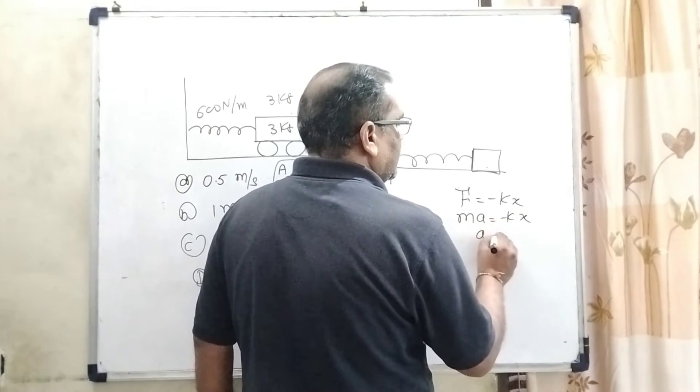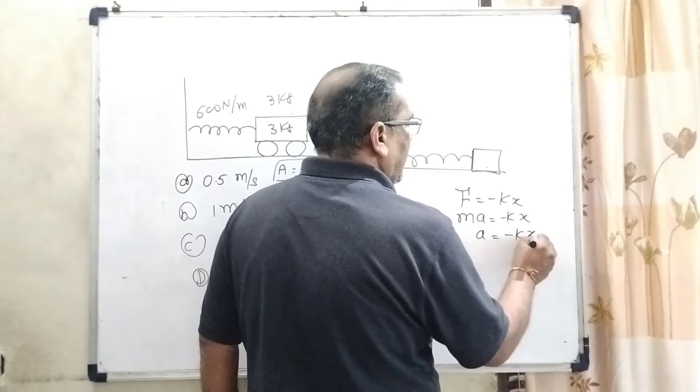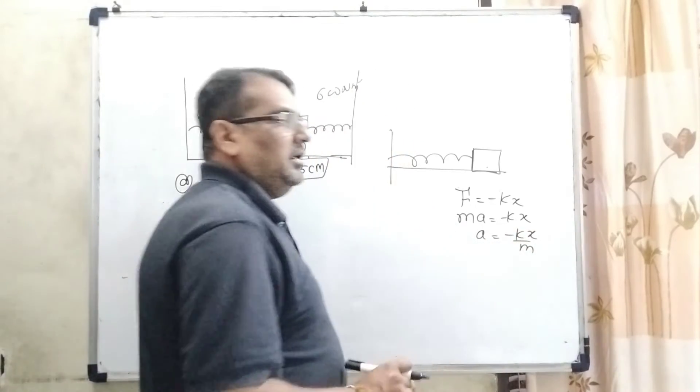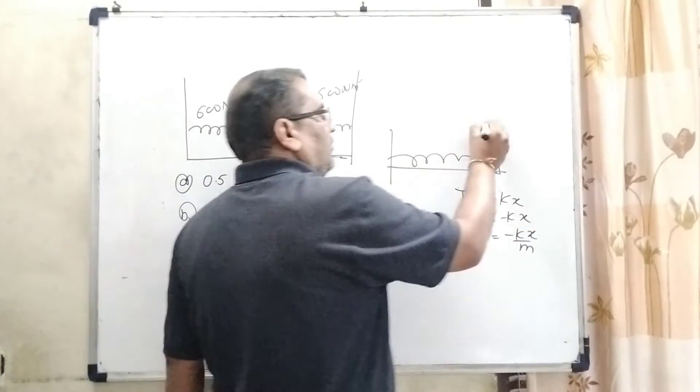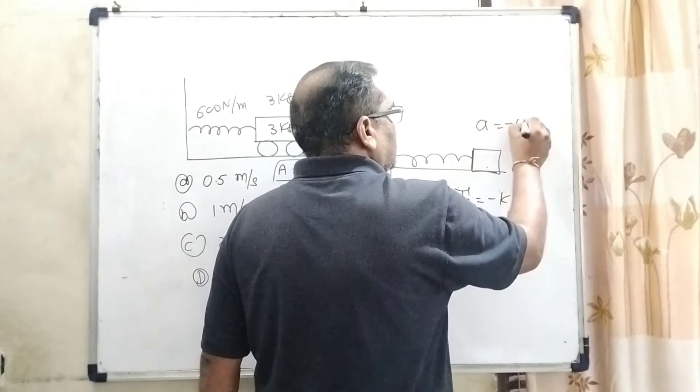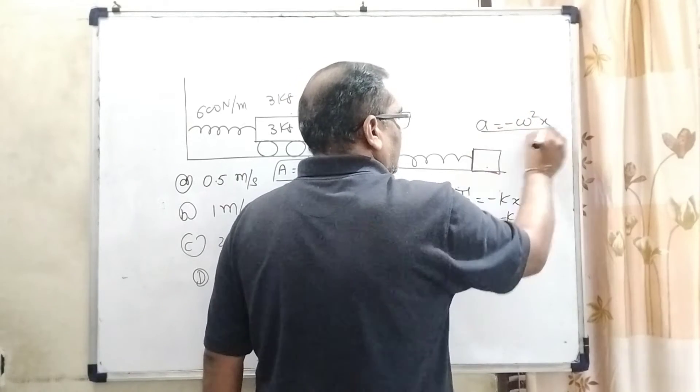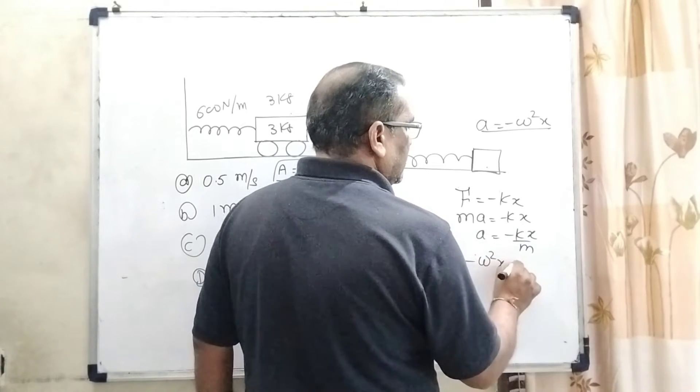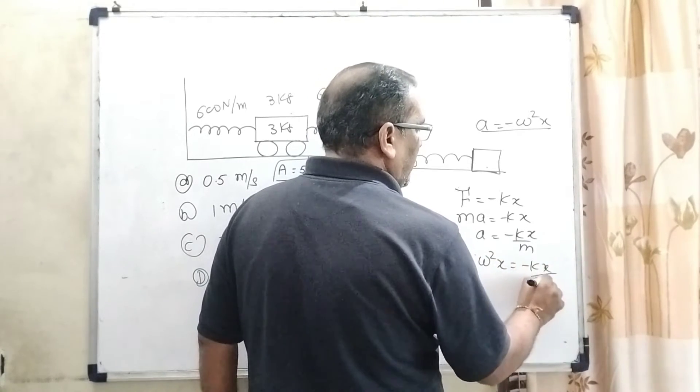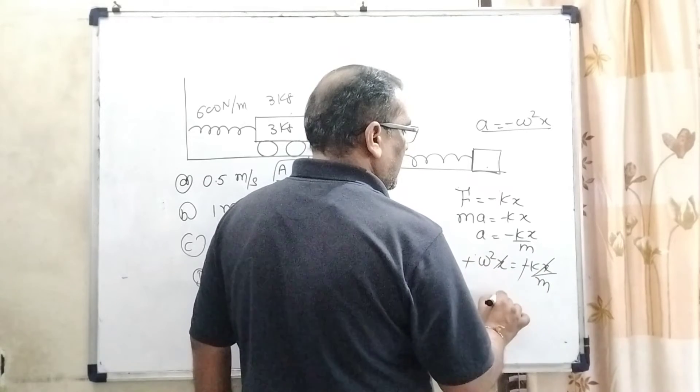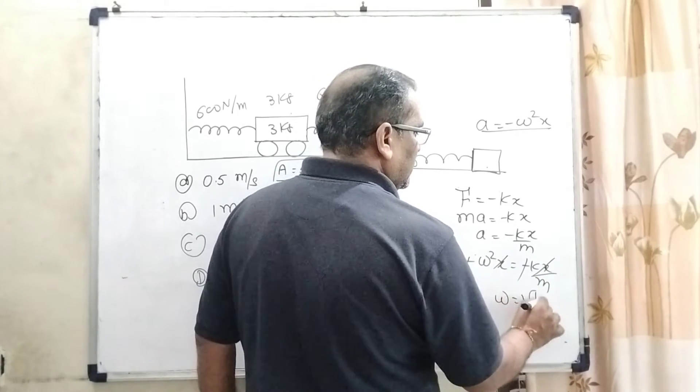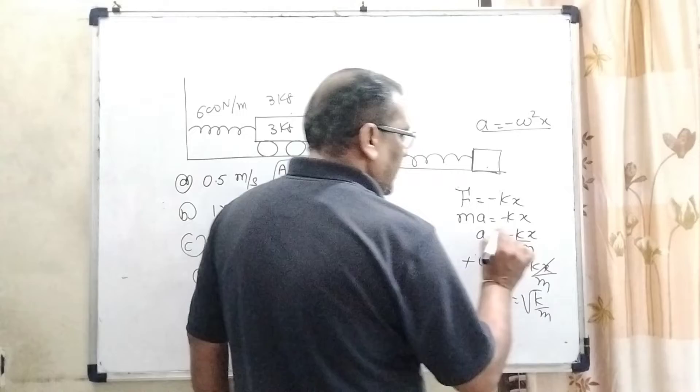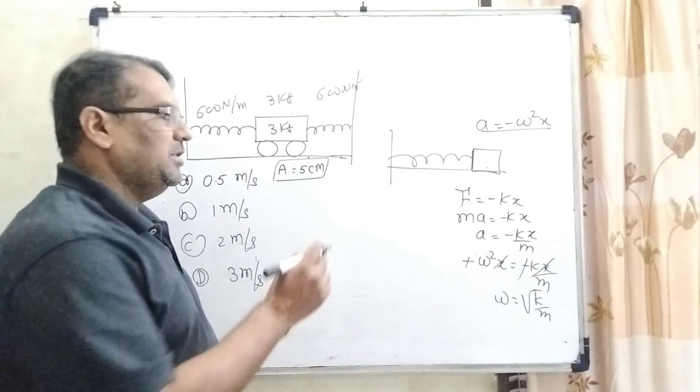So here, acceleration can be written as a = -kx/m. But for oscillatory motion, we know that a = -ω²x. Now substitute this value: -ω²x = -kx/m. Here x cancels out, minus cancels out, then ω can be written as √(k/m). Here k is the spring constant, m is the mass of the body.